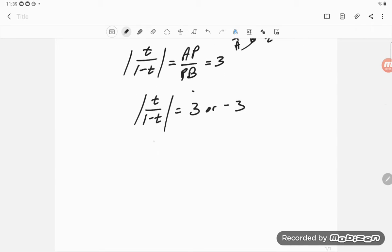So absolute values, needed to get rid of those absolute values. So t over 1 minus t is either 3 or negative 3.